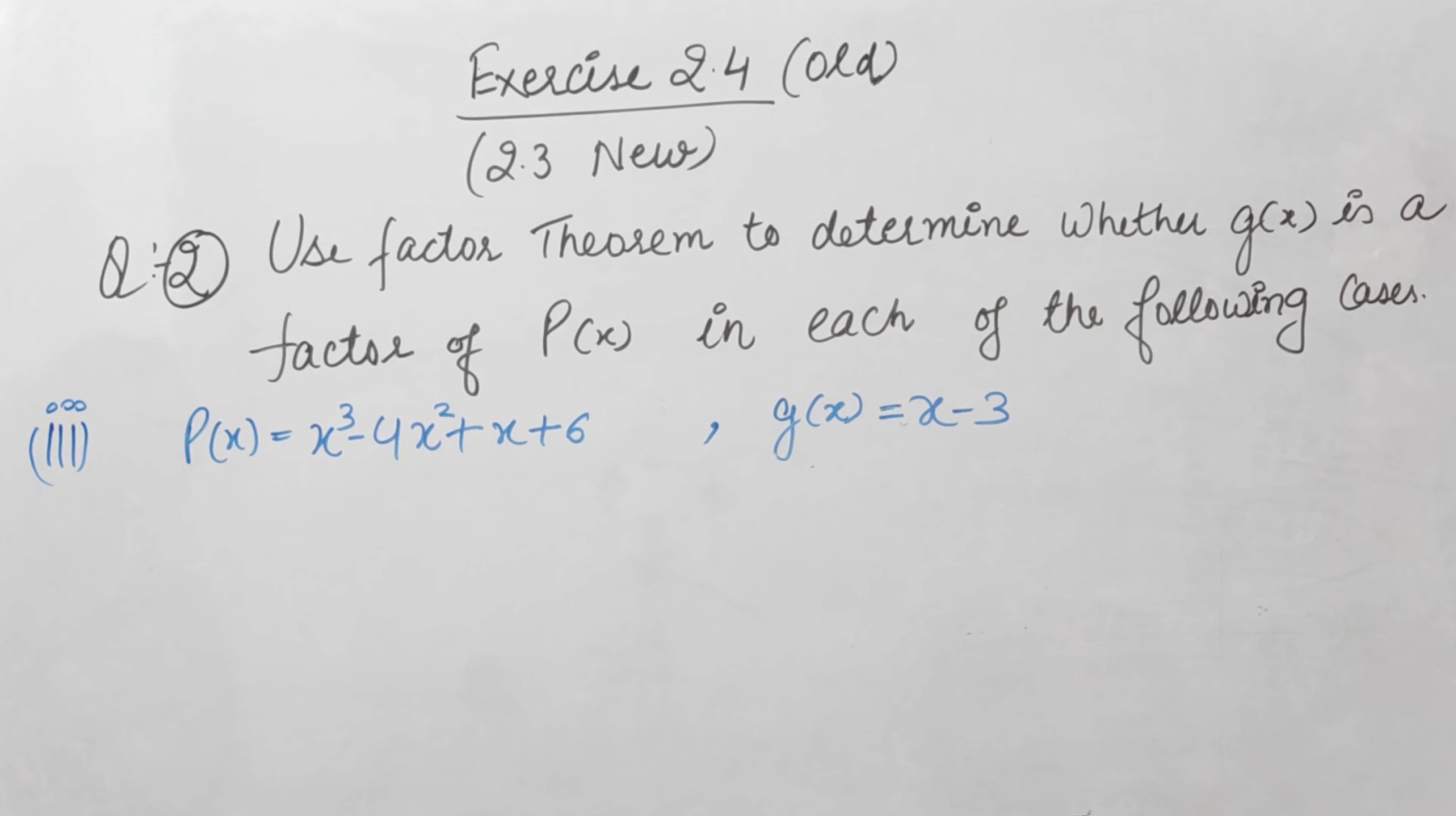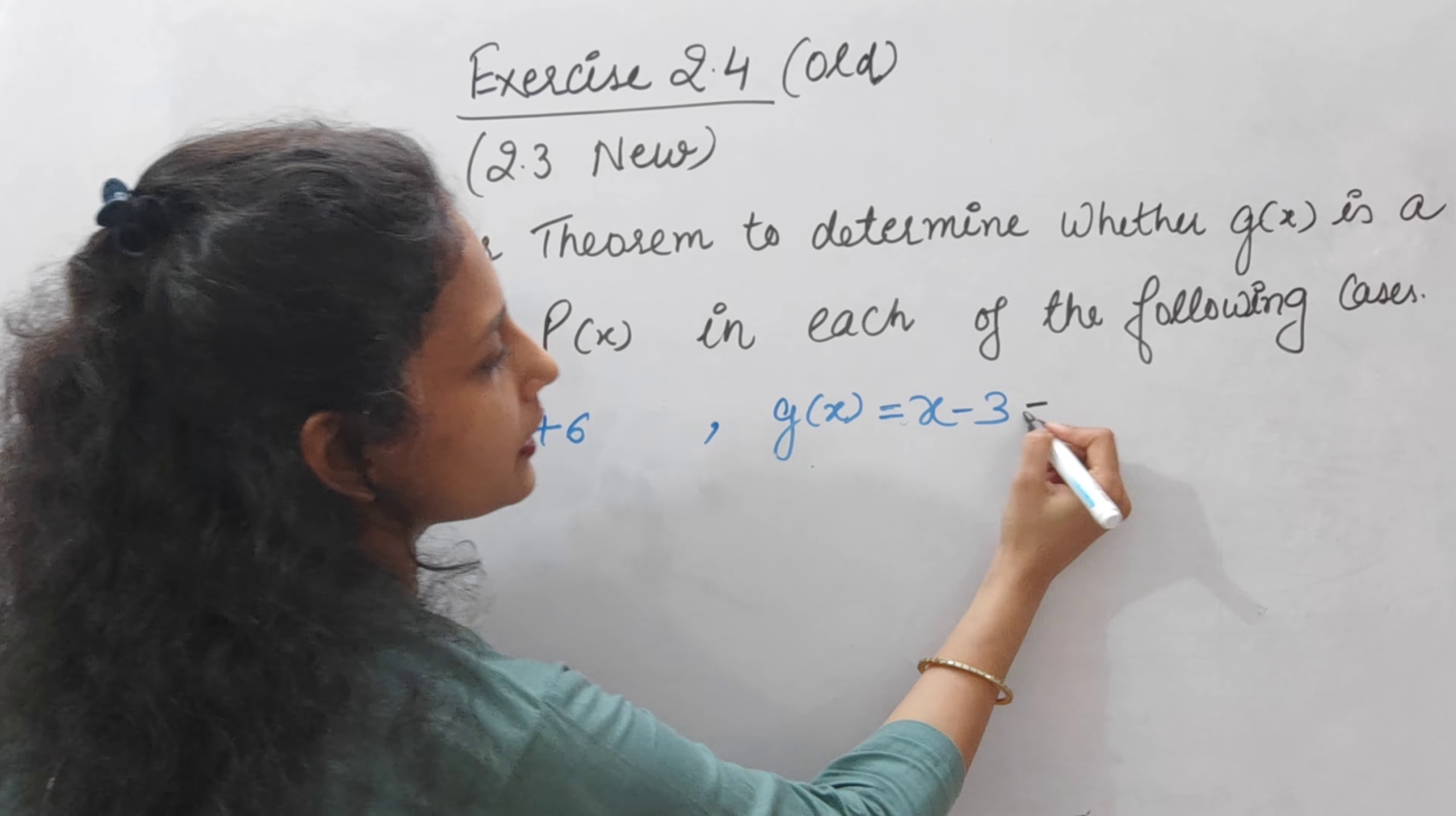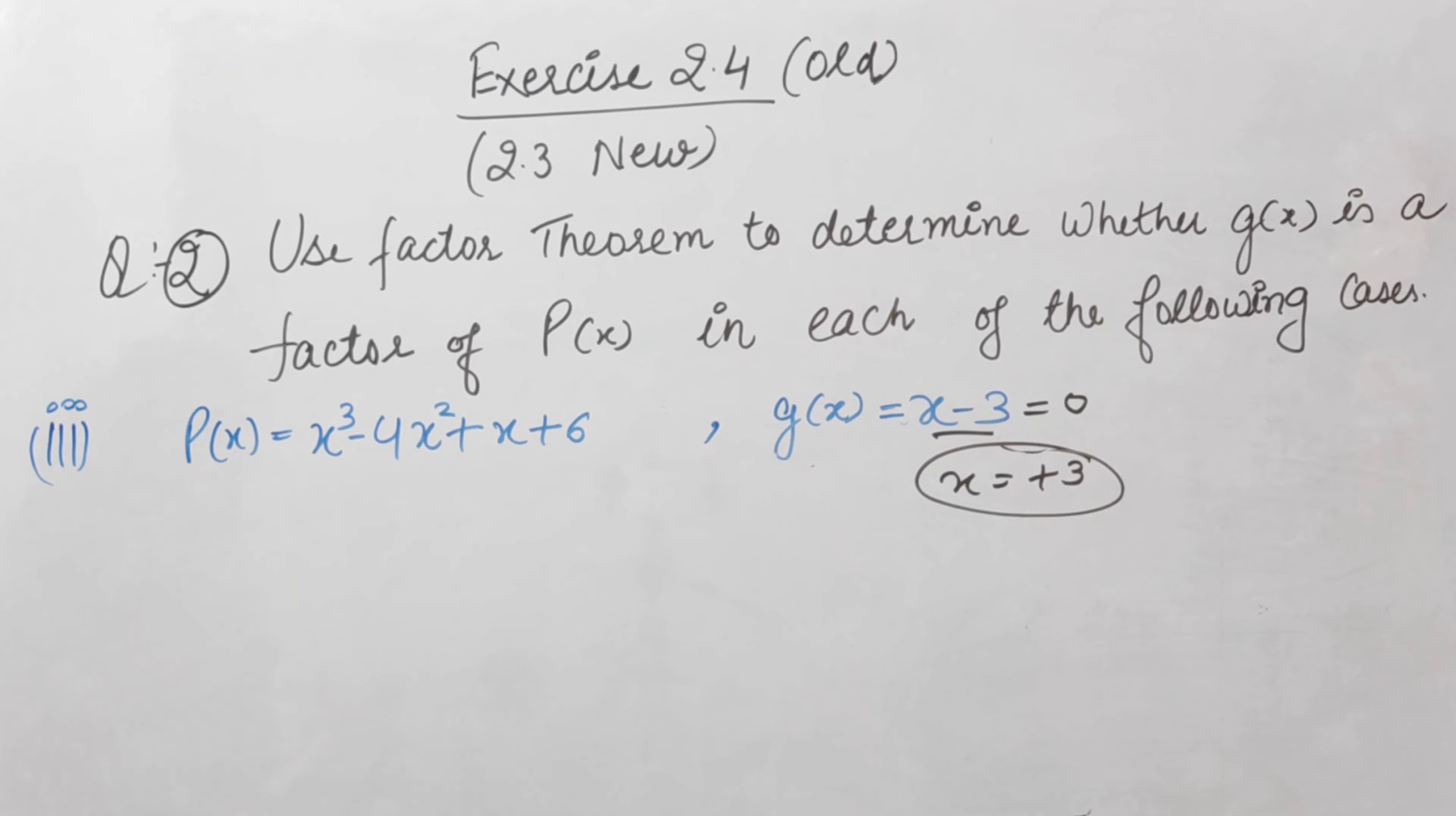Third part, which is the last part of this question: P(x) is equal to x cube minus 4x square plus x plus 6, and g(x) is x minus 3. So if we put g(x) equal to zero, x will equal plus 3. So we have to replace x with 3. So P(3) equals 3 cube minus 4 times 3 square plus 3 plus 6. Simple calculation - just solve it carefully.